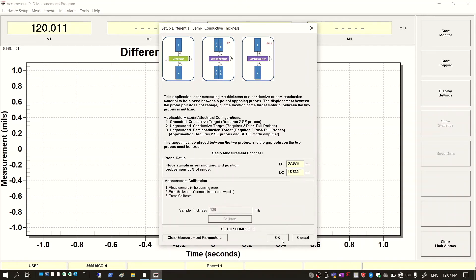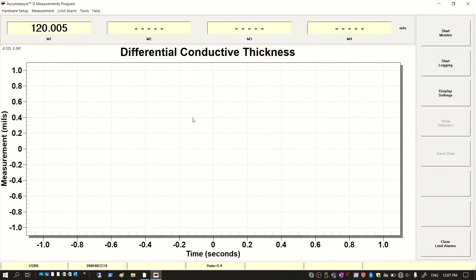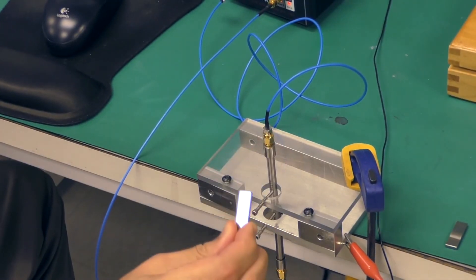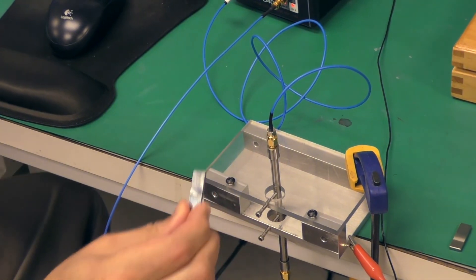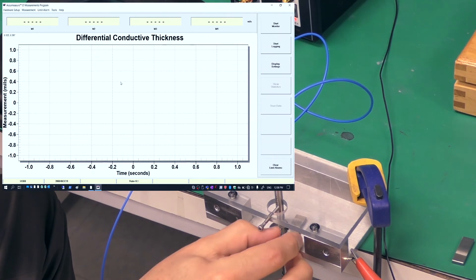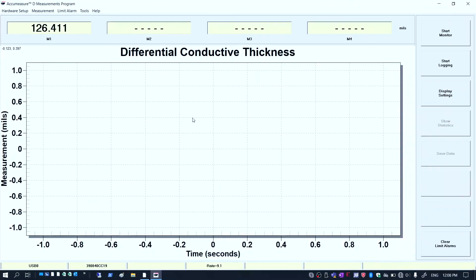Now that we're calibrated and we're measuring the 120 mils from the block we used, we're going to replace it with a 126 block just to show that now we're measuring a different thickness. We can see that now the software is displaying 126 mils.